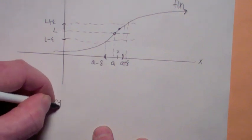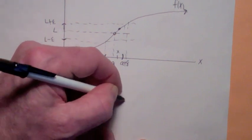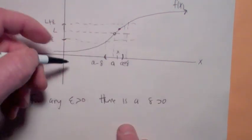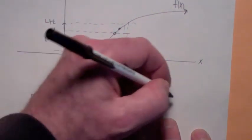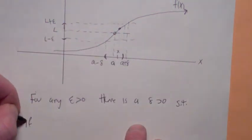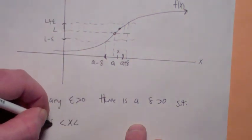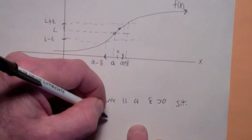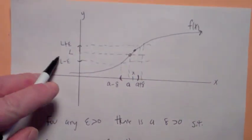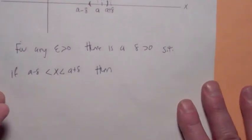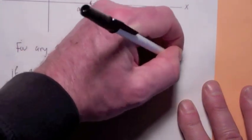for any epsilon, in other words, for any error bound on the y-axis, there is a delta, which would be a corresponding interval that depends on epsilon, around the x-axis. So that what? If x is inside of that interval, so wouldn't it be x has to be greater than a minus delta, and less than a plus delta, then what? Then f of x has to be in this band. So you'd say then l minus epsilon is less than f of x is less than l plus epsilon.